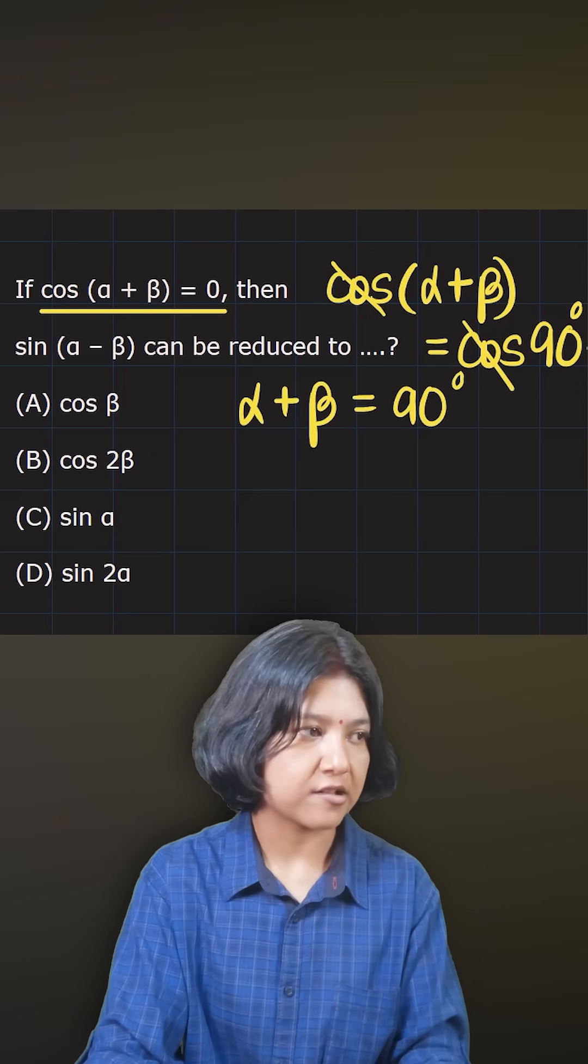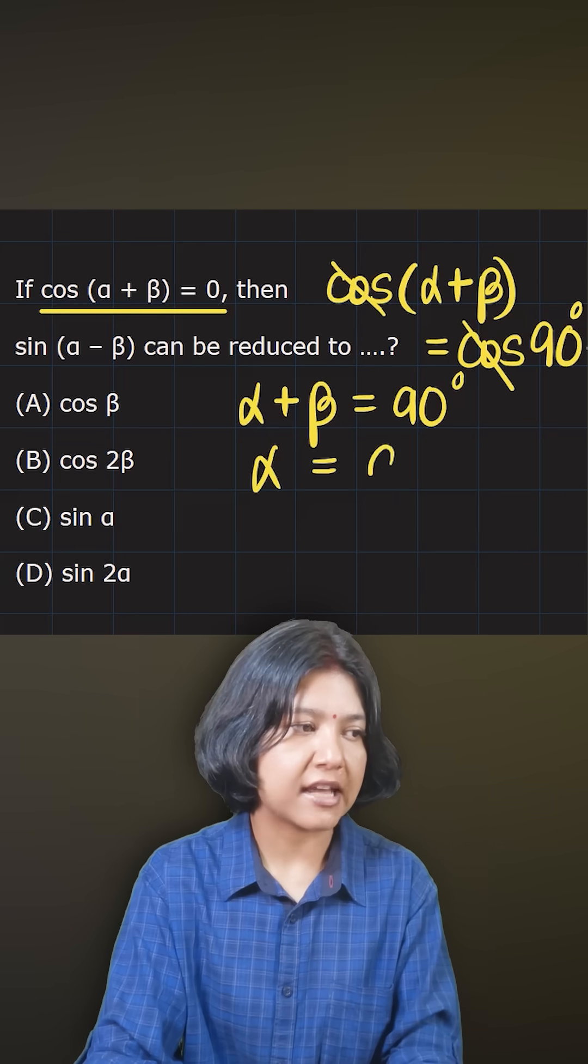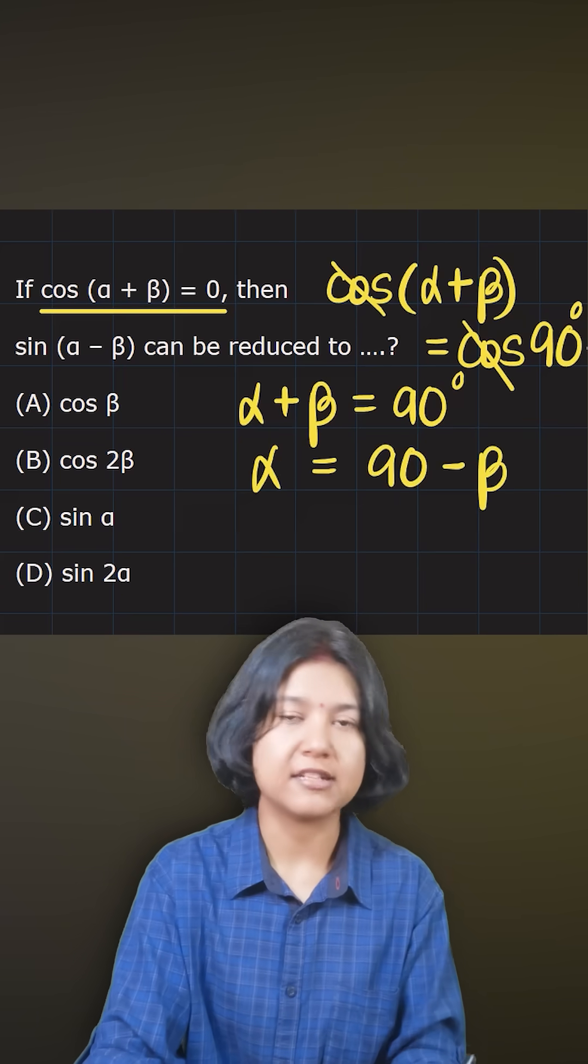Now α and β are complementary angles. I can write one of the angles as 90 - β, which is 90 minus the other.